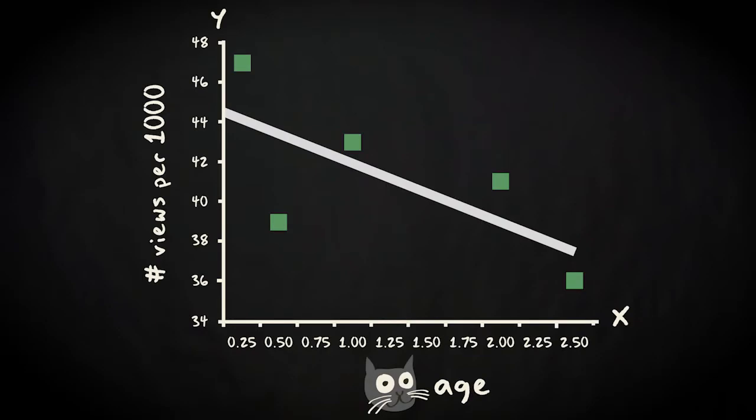Earlier, we looked at an example where we predicted popularity of cat videos, measured as number of video views, using the cat's age as the predictor. In this very small sample, we only considered the relation between these variables for this particular sample. But of course my hope is that the regression equation describes the relation in general, so not just for this sample,